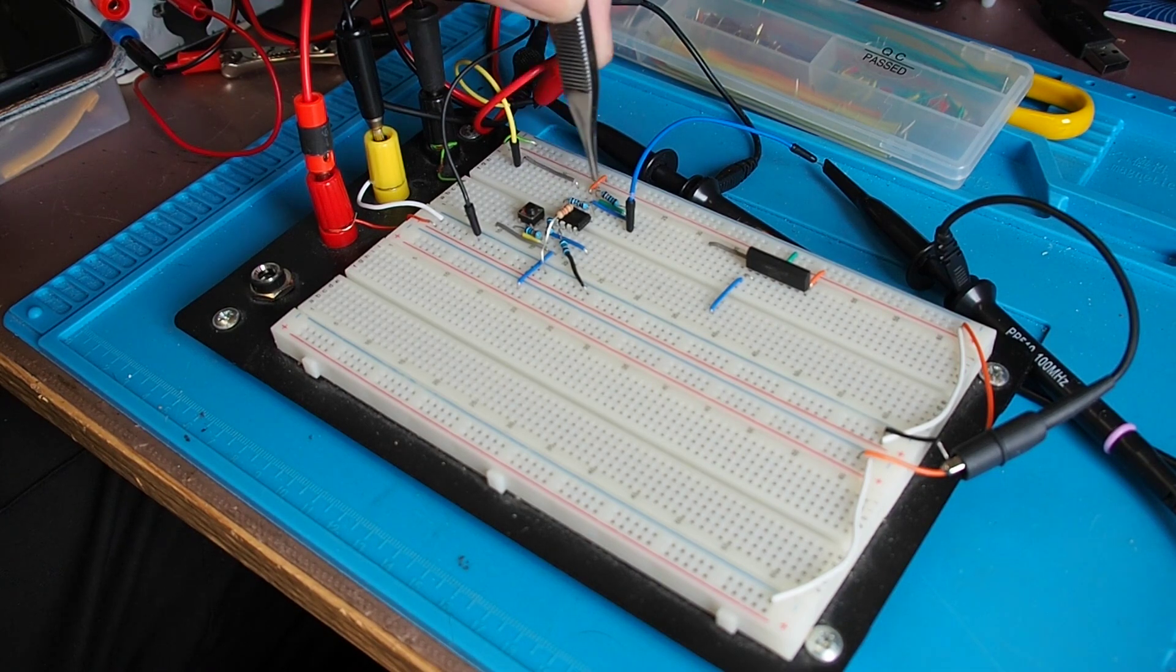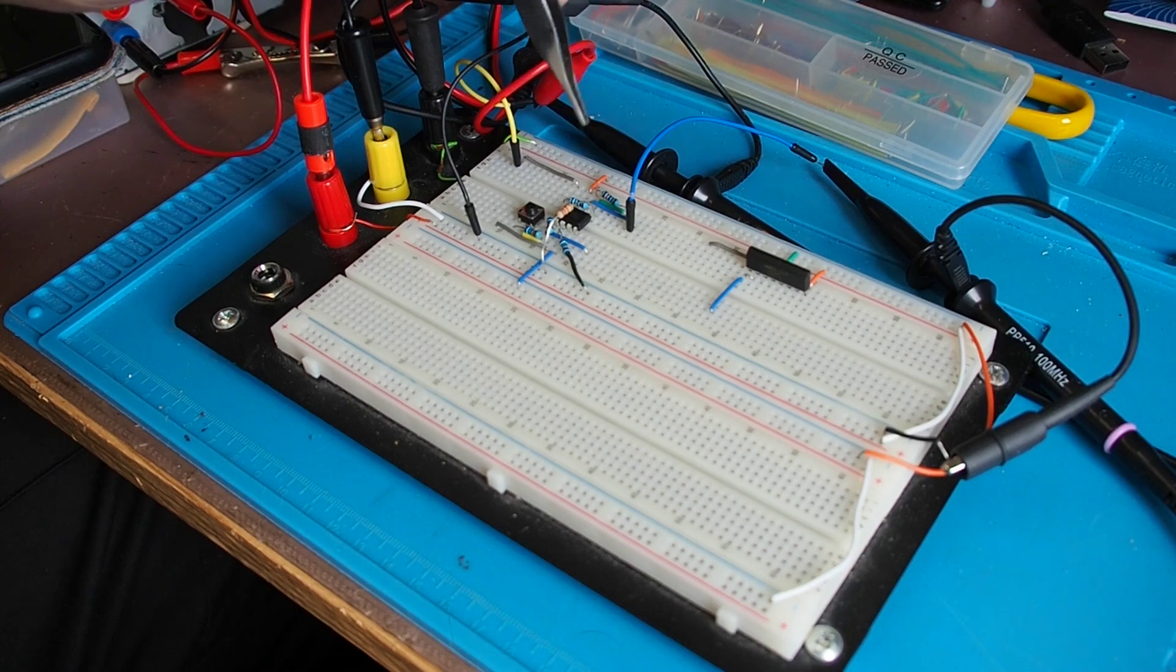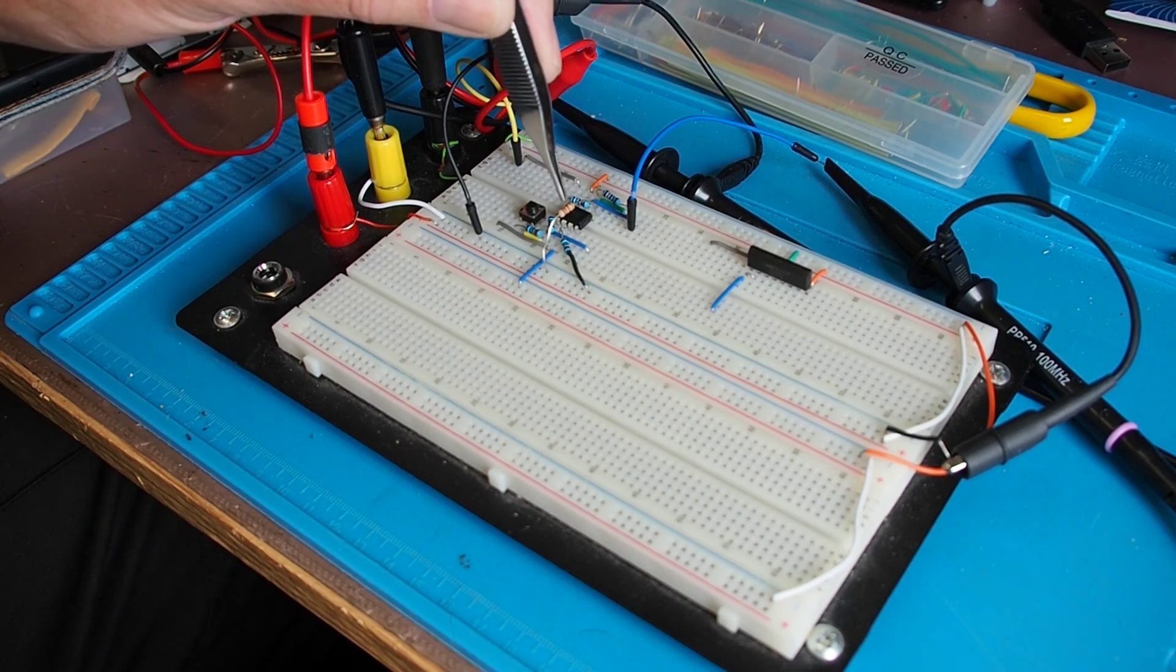So these are the two resistors that control the feedback and the input, and this is the 8k2 resistor which is connected to the positive gain input.